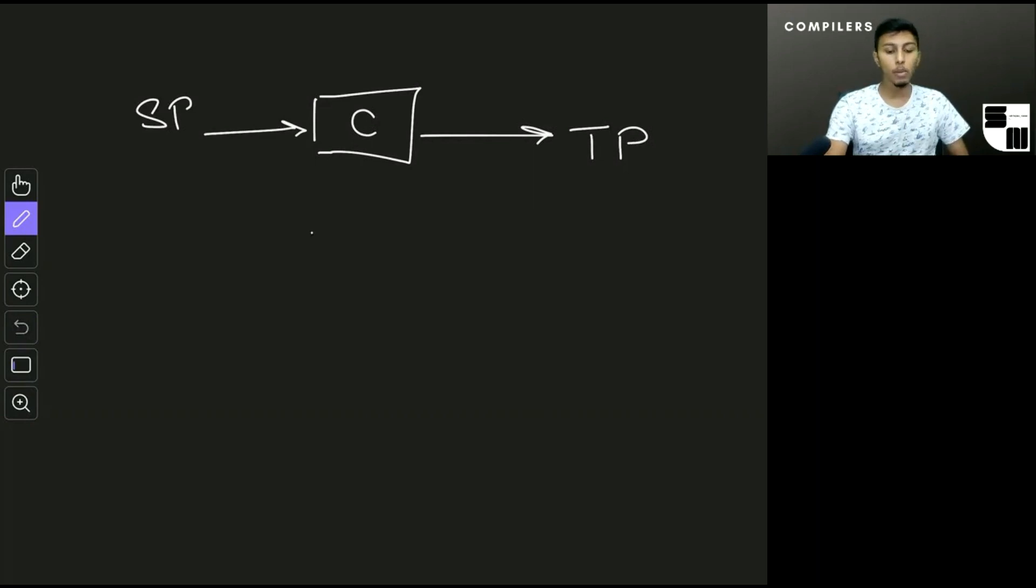And next, what we do is we take the target program here and we feed it some input and the target program gives us some output. Now, the thing to note here is that the target program is machine understandable, and it is often specific to an architecture. So if I use a compiler and create a target program for a computer, then that same thing isn't going to work on a mobile.